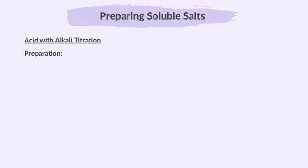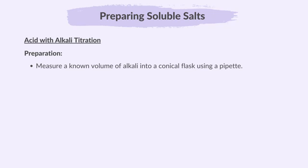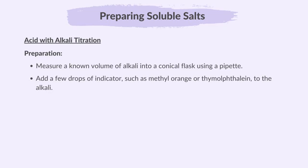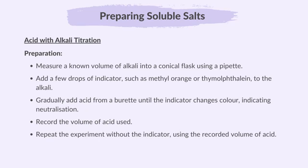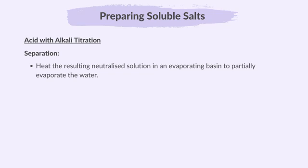The first method is titration, where you carefully add the alkali to the acid until neutralization occurs, forming a soluble salt. First, measure a known volume of alkali into a conical flask using a pipette. Add a few drops of indicator such as methyl orange or thymolphthalein to the alkali. Gradually add acid from a burette until the indicator changes color, indicating neutralization. Record the volume of acid used. Now that we know how much acid is needed to make the salt, repeat the experiment without the indicator using the recorded volume of acid. Heat the resulting neutralized solution in an evaporating basin to partially evaporate the water.